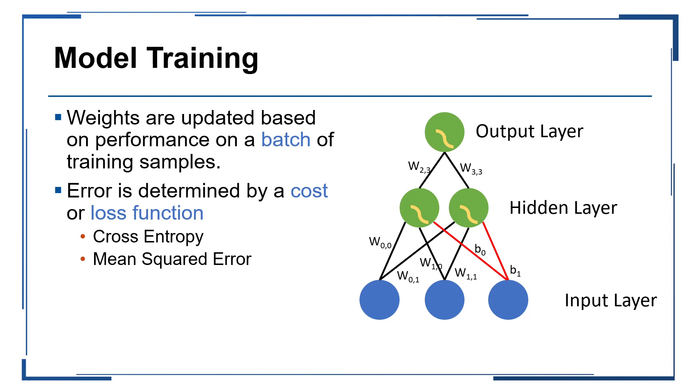We measure error using a cost or a loss function, and two of the most common ones might be a cross entropy function, which is used typically for categorical data, or mean squared error, which is also commonly used for more typical regression tasks respectively.